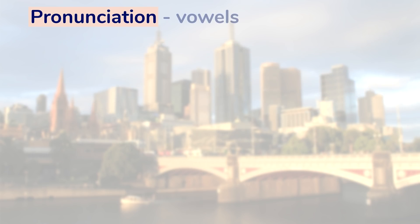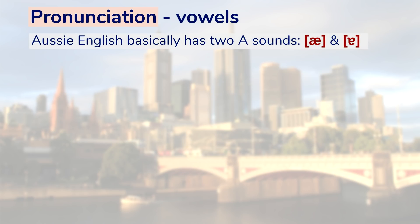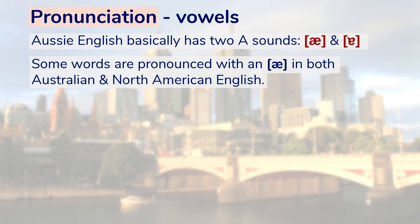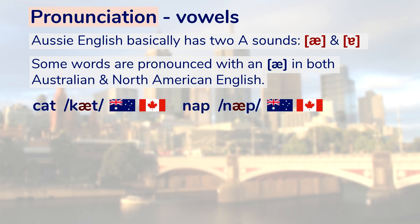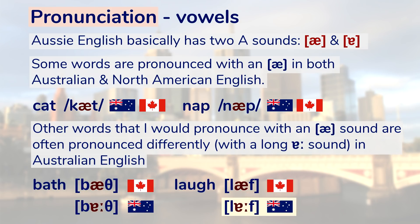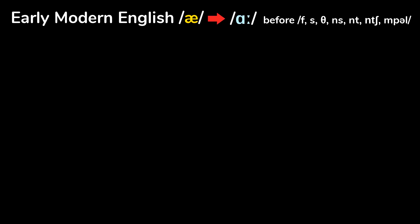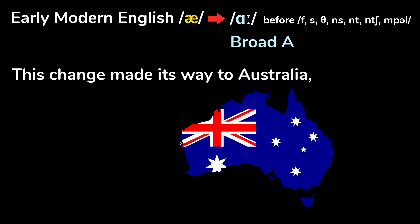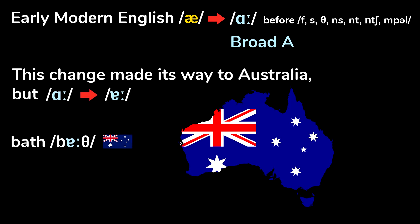Different accents of English are mainly distinguished by differences in vowels, and that's the case with Australian English. Aussie English has two A sounds. Some words are pronounced with the same A in both Australian and North American English — like 'cat' or 'nap.' But other words I'd pronounce with a short A are often pronounced with a long A in Australian English, like 'bath' and 'laugh.' This is because of a split that occurred in early modern English — in southern England, the vowel began changing to a long A before certain sounds. This change made its way to Australia, though the vowel became a central rather than back vowel: 'bath' rather than 'bath.' This distinction has the most influence in South Australia.